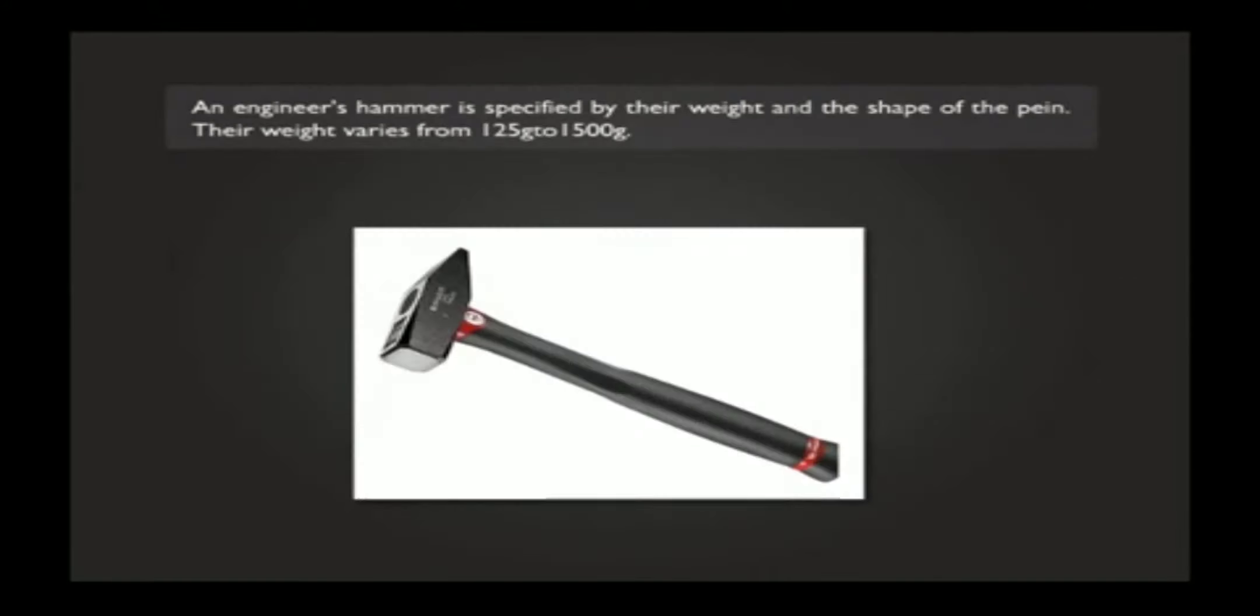An engineer's hammer is specified by their weight and the shape of the peen. Their weight varies from 125 grams to 1,500 grams.